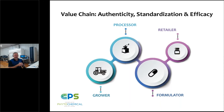We refer to this as a value chain because in addition to the physical product moving through the supply chain, there is also supporting information and intellectual content — such as certificates of analysis and specification sheets — that certifies authenticity at each stage in production.